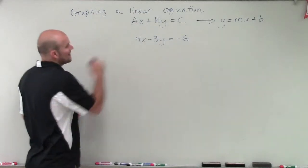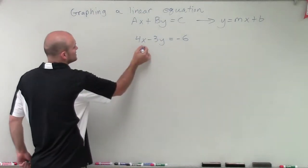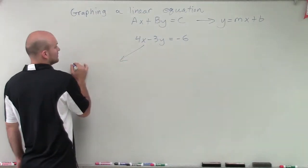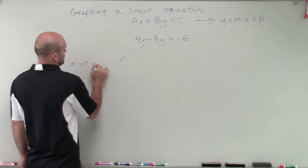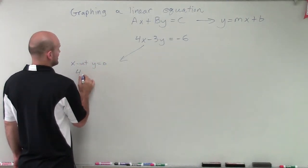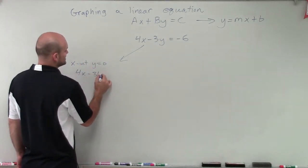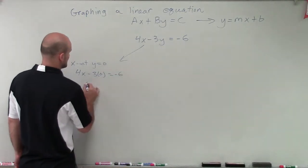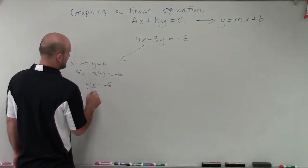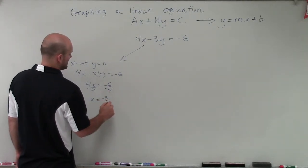And the reason being is because if I want to find the x-intercept, y equals 0. And I say 4x minus 3 times 0 equals negative 6. So therefore, I have 4x equals negative 6. Divide by 4, divide by 4. x is going to equal negative 3 halves.